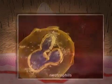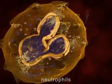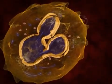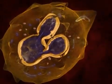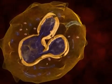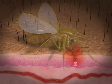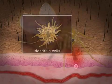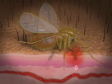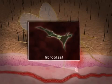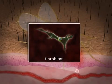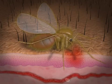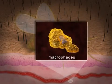Such cell types include neutrophils that are rapidly recruited to the bite site, dendritic cells, fibroblasts, and mainly the macrophages.